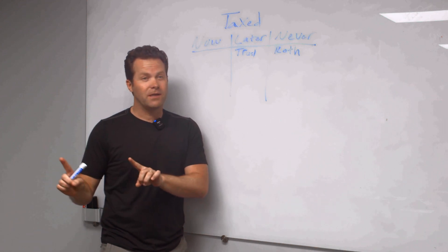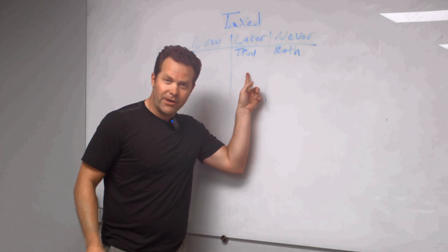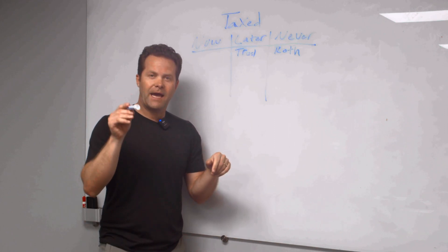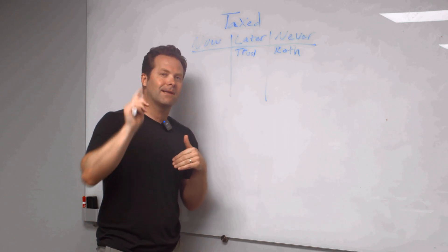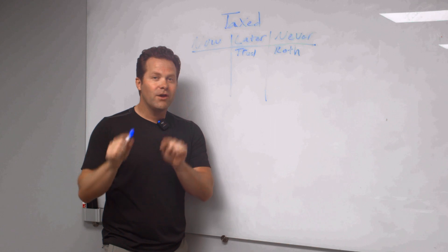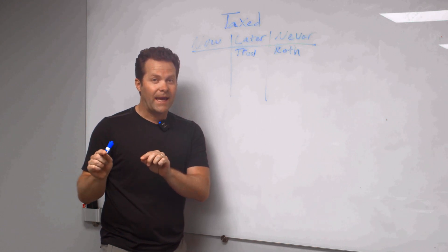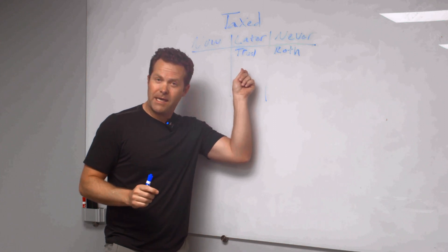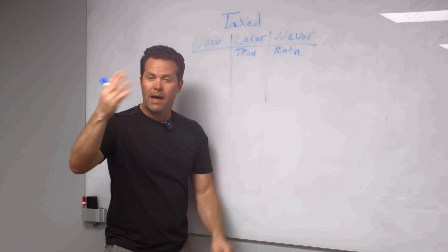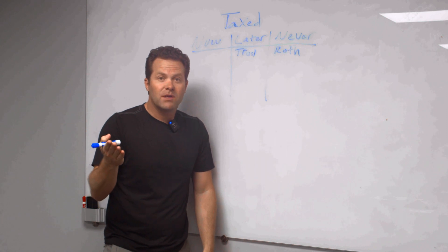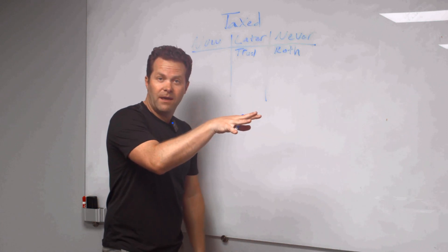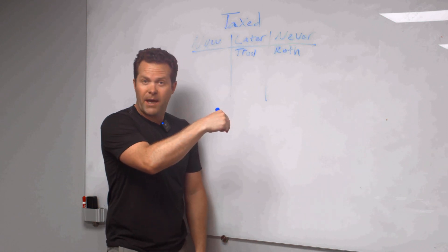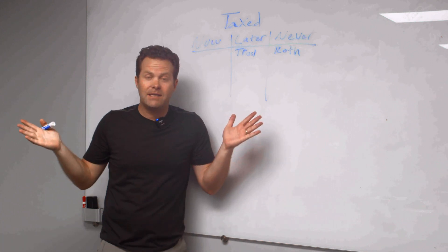The next best option is taxed later. Sometimes people call this tax-deferred. I like to call it taxed later. This is your IRA or 401K, your traditional IRA or 401K. When you're making money here in your traditional IRA or 401K, it's building up. If I had $100,000 of Facebook stock, I sell it for $150,000, that whole $150,000 goes back into my IRA account. I don't send the IRS anything.